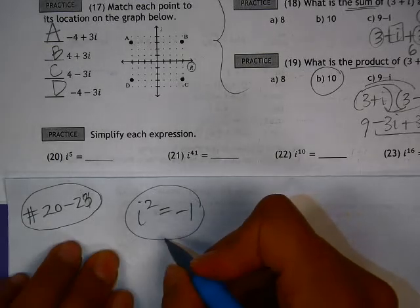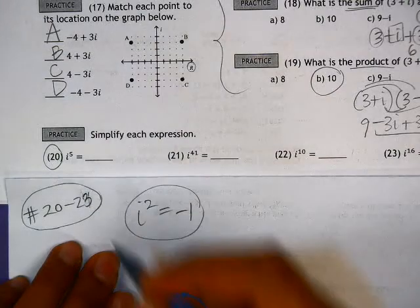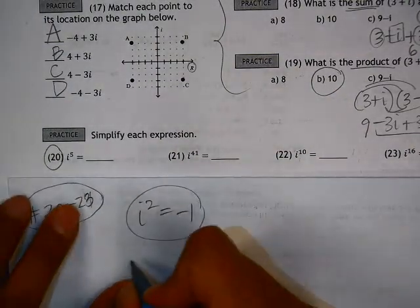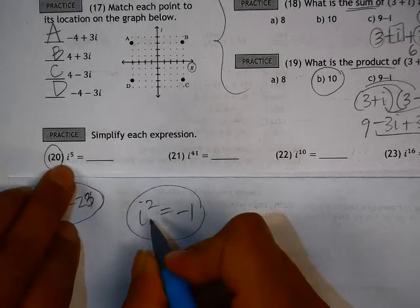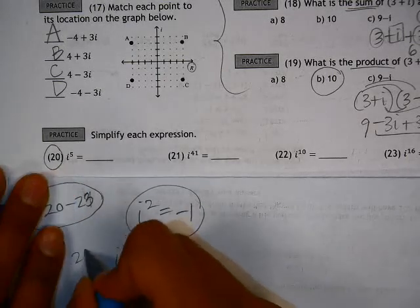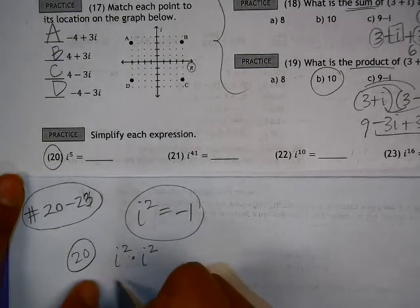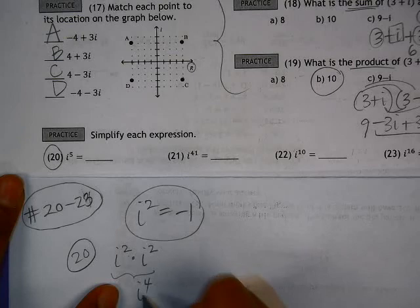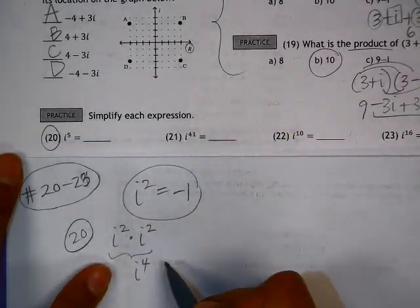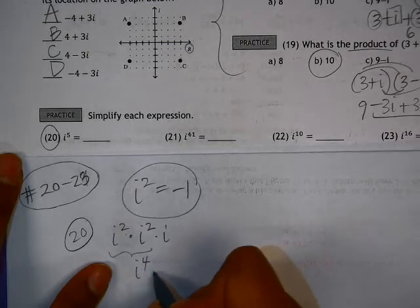Let's start by looking at i to the fifth. So number 20, if we had broken this up into i squared, so we have i squared, another i squared. That gives us i to the fourth. We need one more i in order to make this equivalent to i to the fifth. So we have i to the fourth times i.